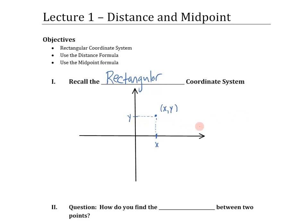The y value measures how far up and down you are. For example, if you were to plot the point (1, 2), that would mean you go 1 in the x direction and 2 in the y direction. That's why we call this the x-axis and this the y-axis. We'll be working with this throughout the course, so you'll want to be familiar with it going forward.